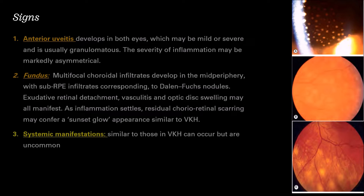As inflammation settles, residual chorioretinal scarring may produce a sunset fundus appearance, similar to that seen in Vogt-Koyanagi-Harada syndrome. Systemic manifestations like those in VKH — neurological, auditory, and skin manifestations — can occur but are uncommon. A link to the VKH lecture will be provided at the end of this lecture and in the description box.